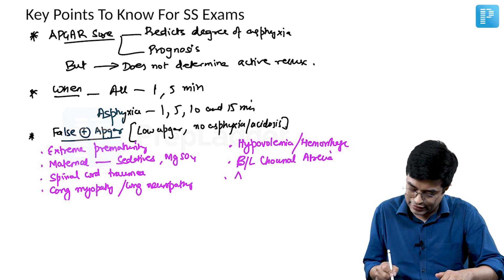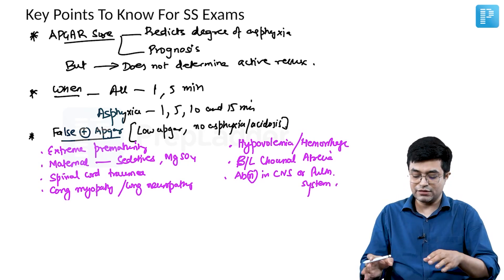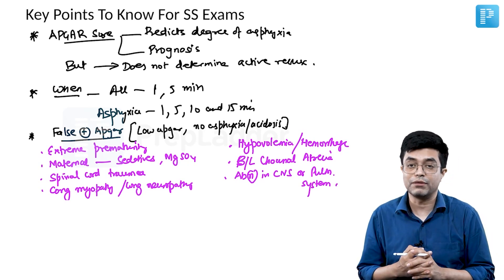Last but not the least, abnormalities in CNS or pulmonary system. Congenital malformations in CNS or pulmonary system can also cause a false positive APGAR score.